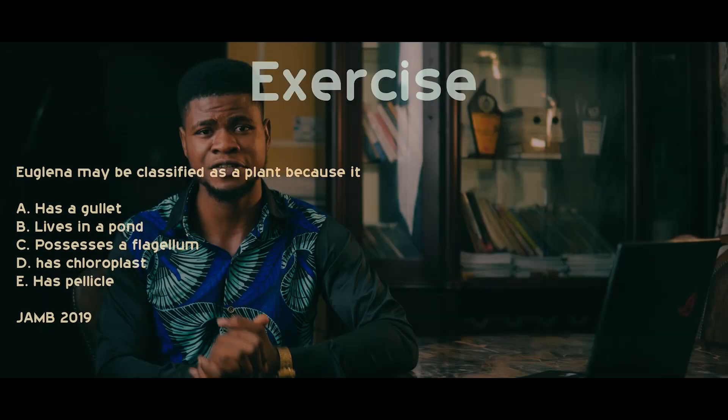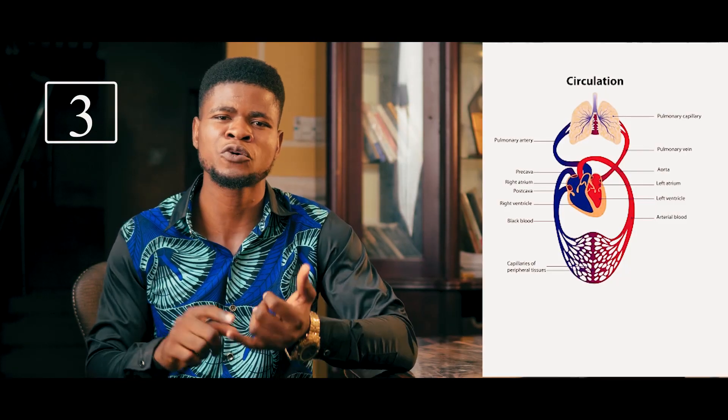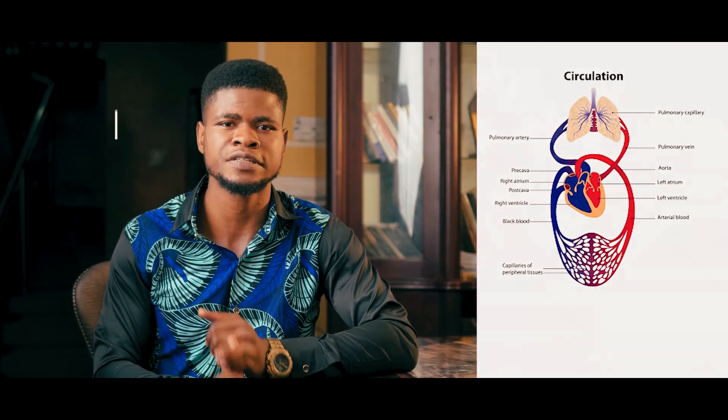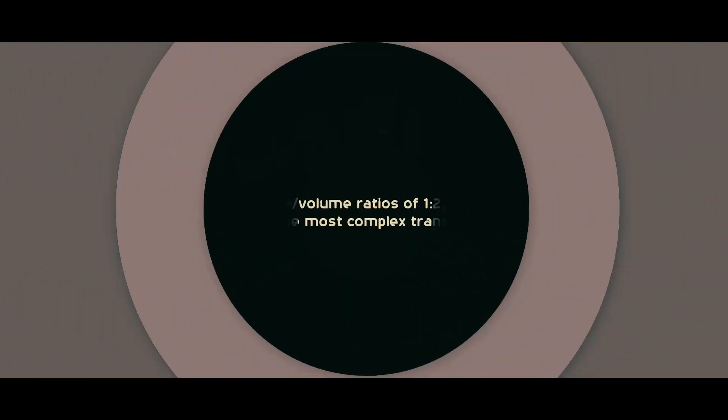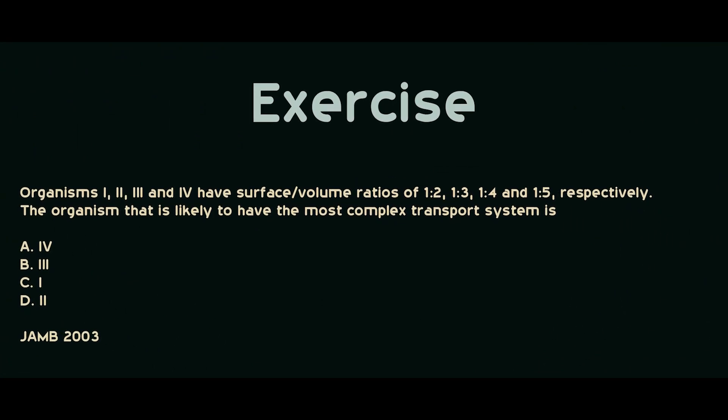The next is transport systems. Here you should know the open and closed circulatory system, know the difference between the systemic and the pulmonary circulation, and know the gradation of hearts in fishes, in amphibians, and in humans. Also know the components of this circulatory system. For example, JAM might ask you: the tricuspid valve is found in which side of the heart? If you know the answer, leave it in the comment section below. Attempt the question on your screen and leave your answer in the comments.